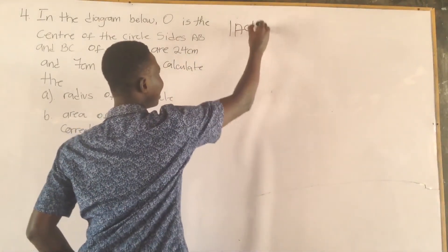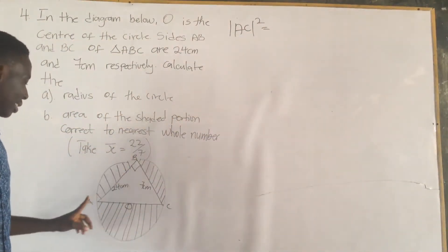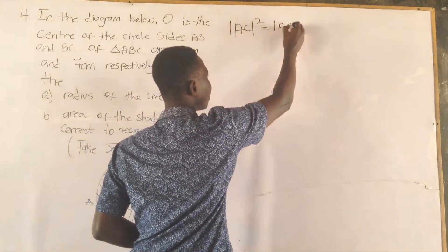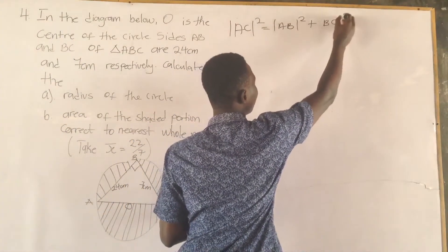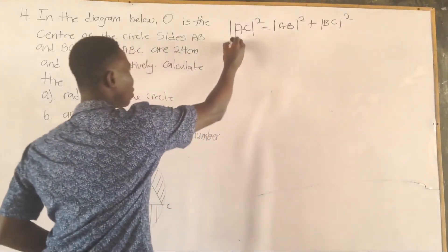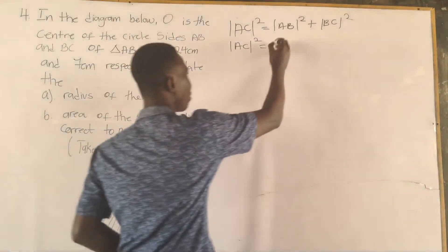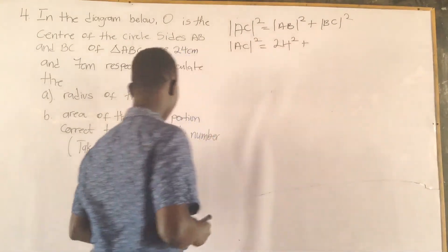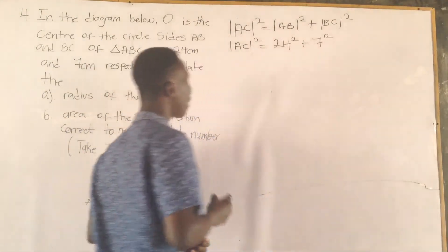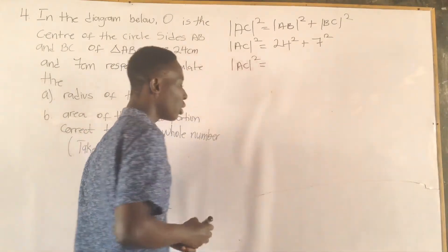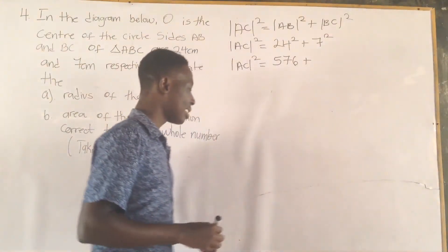When we use the Pythagorean theorem, we use the longest side, which is AC. So AC squared is equal to the sum of the other sides squared: AB squared plus BC squared. AB is 24, so 24 squared, and BC is 7, so 7 squared.